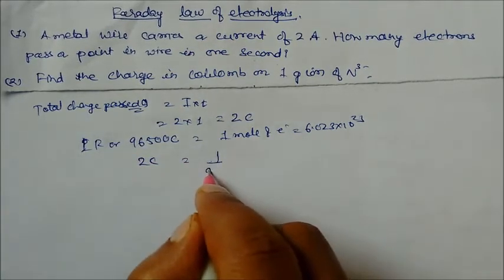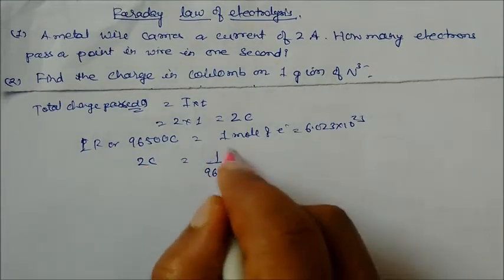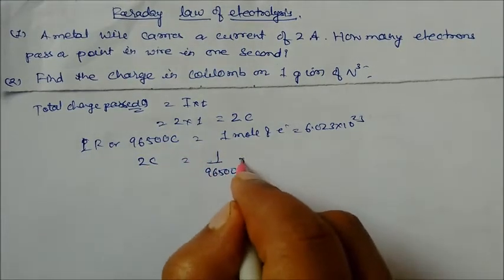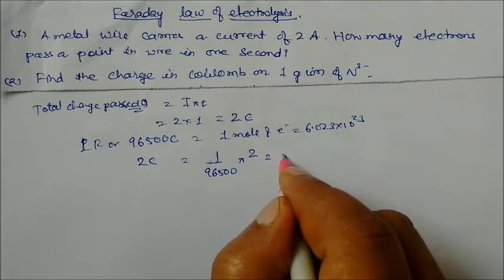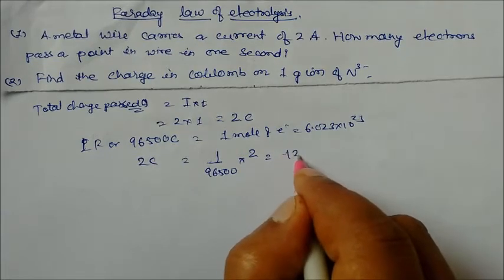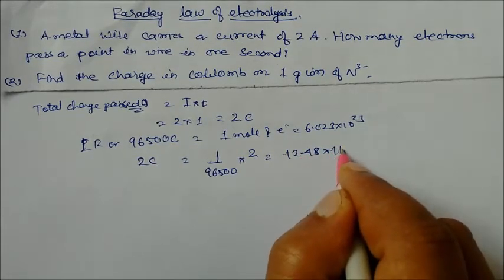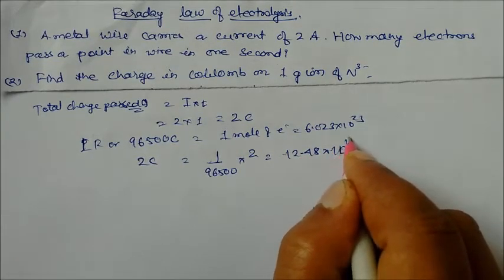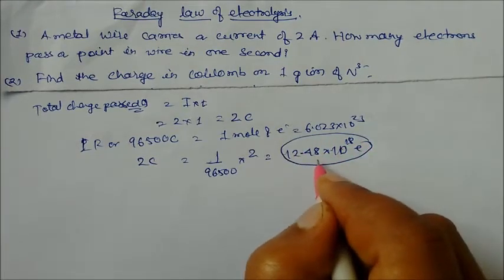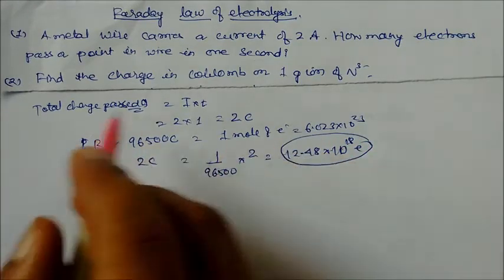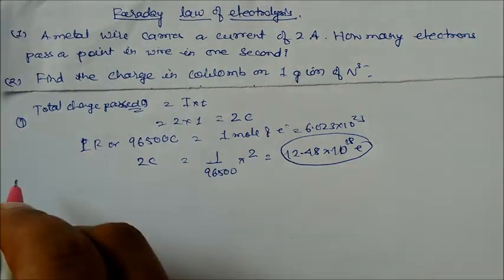For 2 coulomb, it will carry (1/96500) × 2 moles of electrons. On solving, you will get 12.48 × 10¹⁸ electrons. So this is our answer — this many electrons pass a point in the wire in one second.